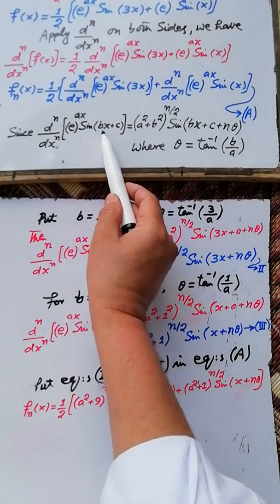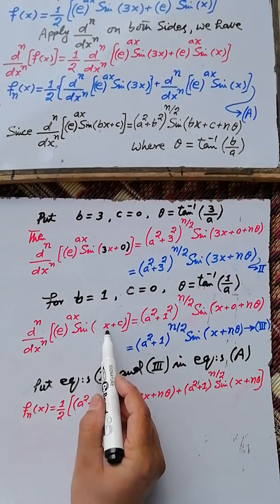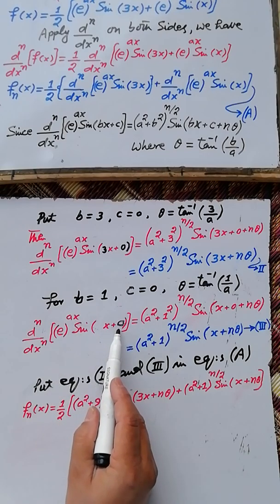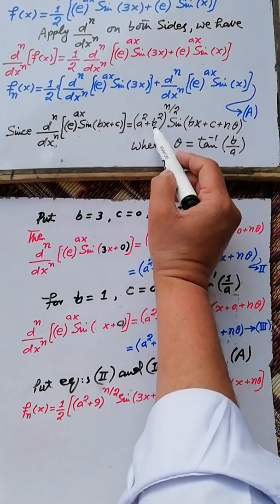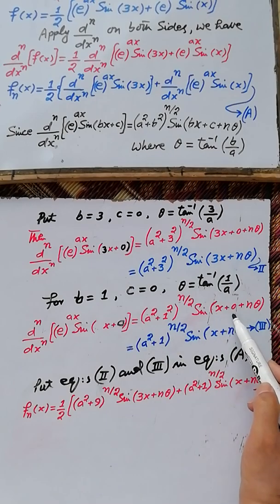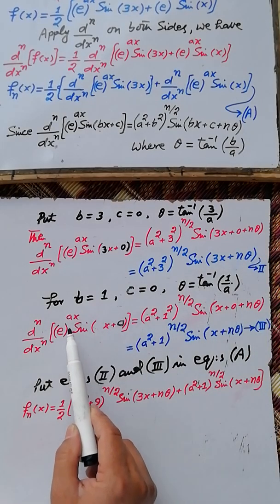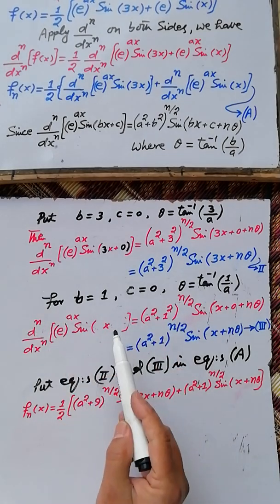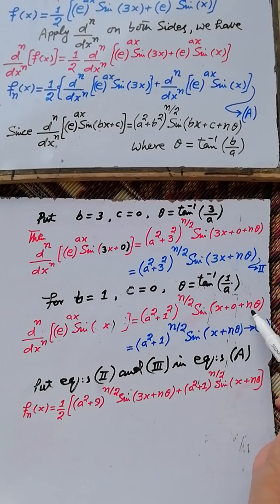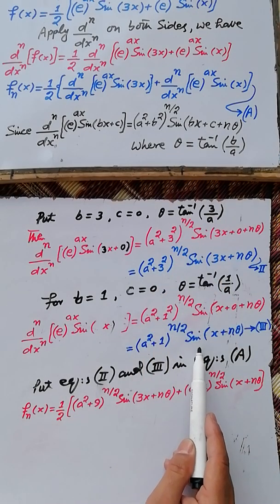For the nth derivative of e raise power ax sin(x), we put b = 1 and c = 0. Then the nth derivative of e raise power ax sin(x) = (a² + 1²)^(n/2) sin(1·x + 0 + n·θ), which equals (a² + 1)^(n/2) sin(x + n·θ), where θ = tan⁻¹(1/a), and a is the coefficient in e raise power ax.